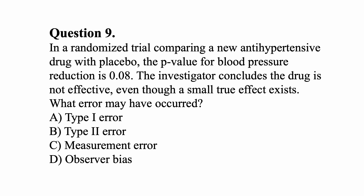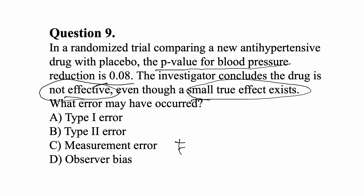Question nine: In a randomized trial comparing a new antihypertensive drug with placebo, the p-value for blood pressure reduction is 0.08. The investigator concludes the drug is not effective, even though a small true effect exists. The investigator says there is no statistical difference, even though a small true effect does exist. This is calling a false negative — failing to detect a true difference — which is an example of type 2 error, answer B. It's like the smoke detector that doesn't go off.